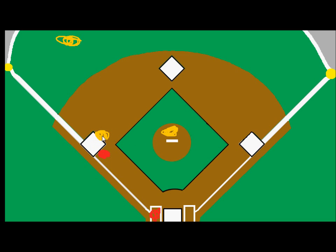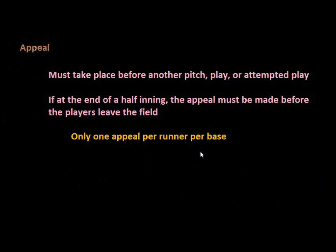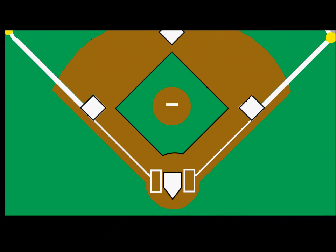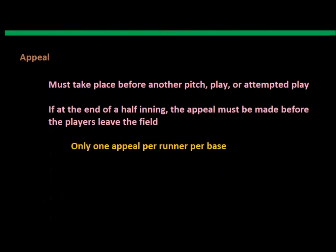The appeal is made by the player getting the ball and stepping on the base they wish to appeal. Regarding the one appeal per runner per base rule — if the pitcher attempted to throw to the third baseman but made a horrible throw and the ball went out of play into the crowd, the defensive team would not be given another chance to appeal that play, and the runner would have scored.